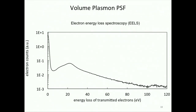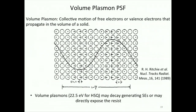By using electron energy loss spectroscopy (EELS), I can measure the electron count as a function of energy loss of transmitted electrons. At 0 eV we have electrons that didn't lose any energy — the largest peak for this sample. At around 20 eV there is a large peak, followed by a big tail after 20 eV. That large peak at 20 eV is what people usually call the volume plasmon, which is the collective motion of free or valence electrons in the case of a dielectric, insulator, or semiconductor that propagate in the volume of the solid.